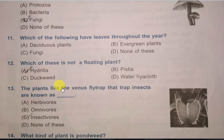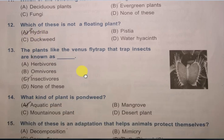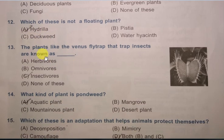Question 12: Which of these is not a floating plant? Options are: hydrilla, pistia, duckweed, water hyacinth. The correct answer is hydrilla.